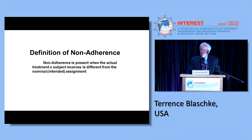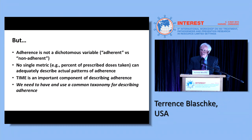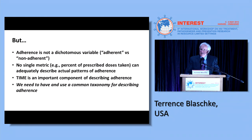The general definition of non-adherence is present when the actual treatment a subject receives is different from the nominal or intended assignment. But that's really not a very good definition — it doesn't have any quantitative information in it. Adherence is not a dichotomous variable; you're not either adherent or non-adherent. And so no single metric — such as percent of prescribed doses taken, which is the one I hear most often discussed — can adequately describe the actual patterns of adherence.